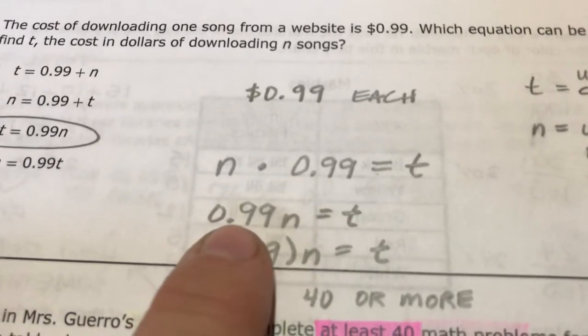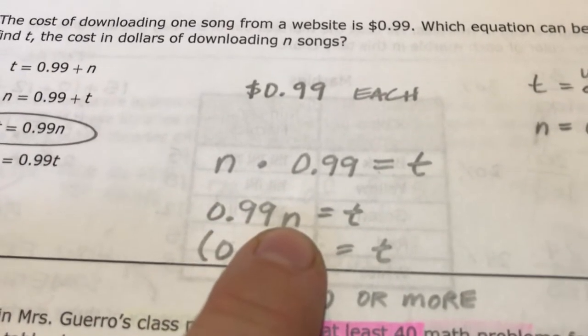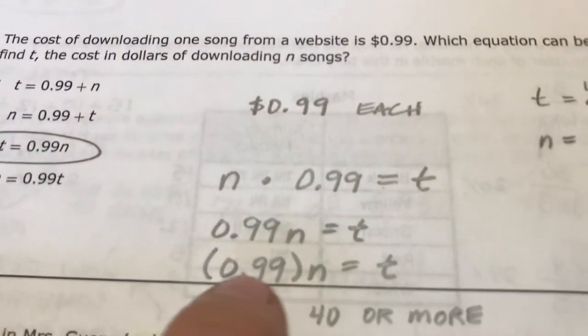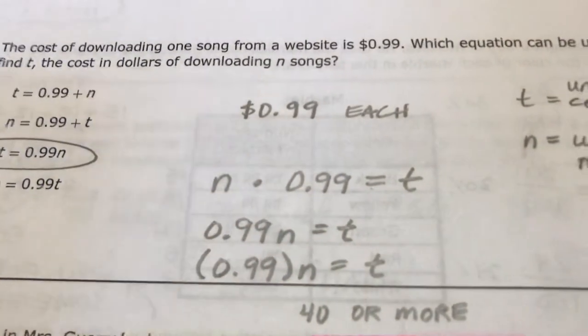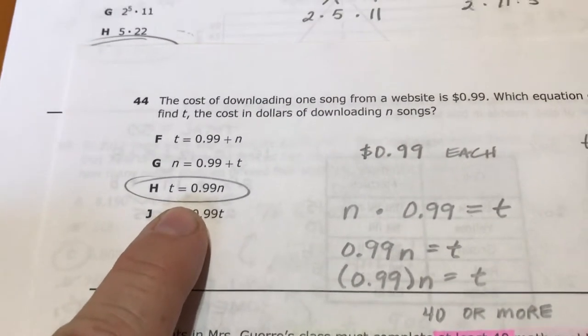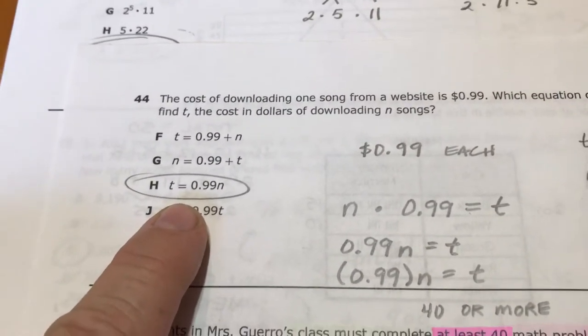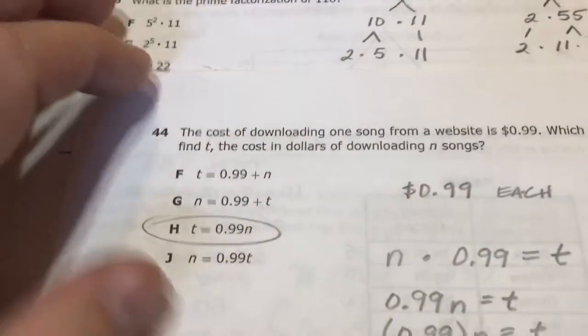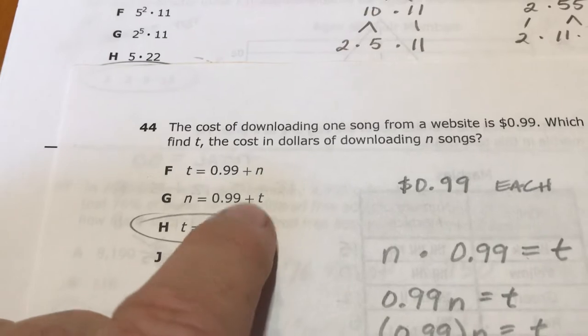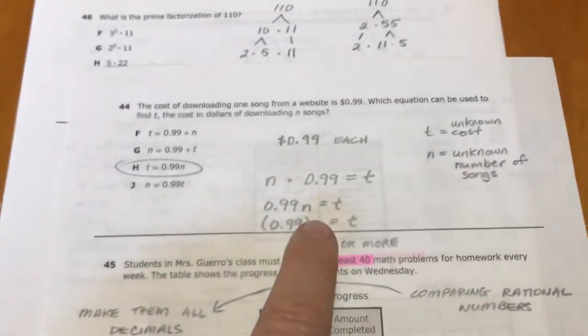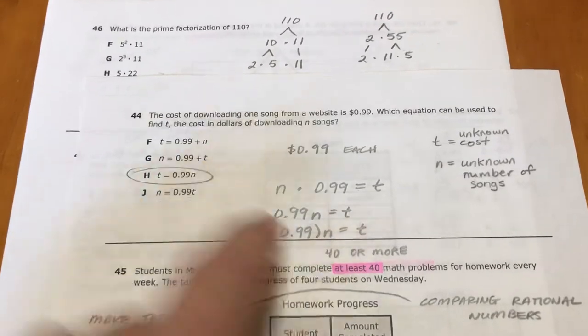So unknown number of songs times 99 cents is your total cost. And you just rearrange those things in the different ways that they can be written. You can just put the number next to the letter, that still means multiplication. You can put one of them in parentheses, that still means multiplication. And so the only one that matches anything that we have is H.